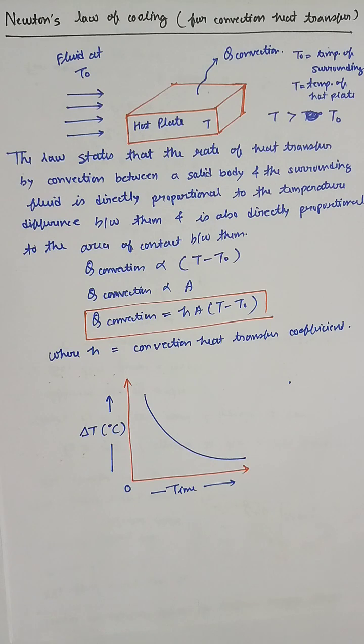The law states that the rate of heat transfer by convection between a solid body and the surrounding fluid is directly proportional to the temperature difference and directly proportional to the area of contact between them. So Q convection equals HA, where H is the convective heat transfer coefficient.